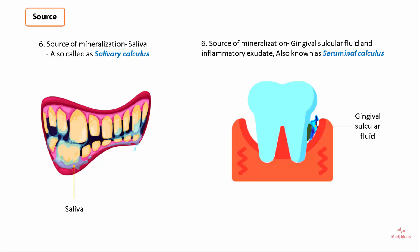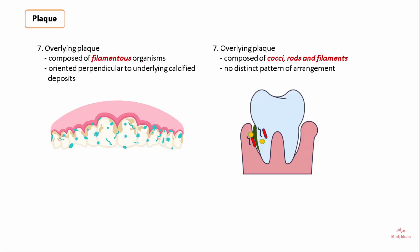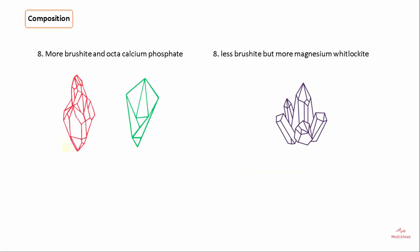Regarding plaque composition, the plaque around supragingival calculus is composed of filamentous organisms oriented perpendicular to the underlying calcified deposits. For subgingival calculus, the overlying plaque is composed of cocci, rods, and filaments, with no distinct pattern of arrangement of these bacteria.